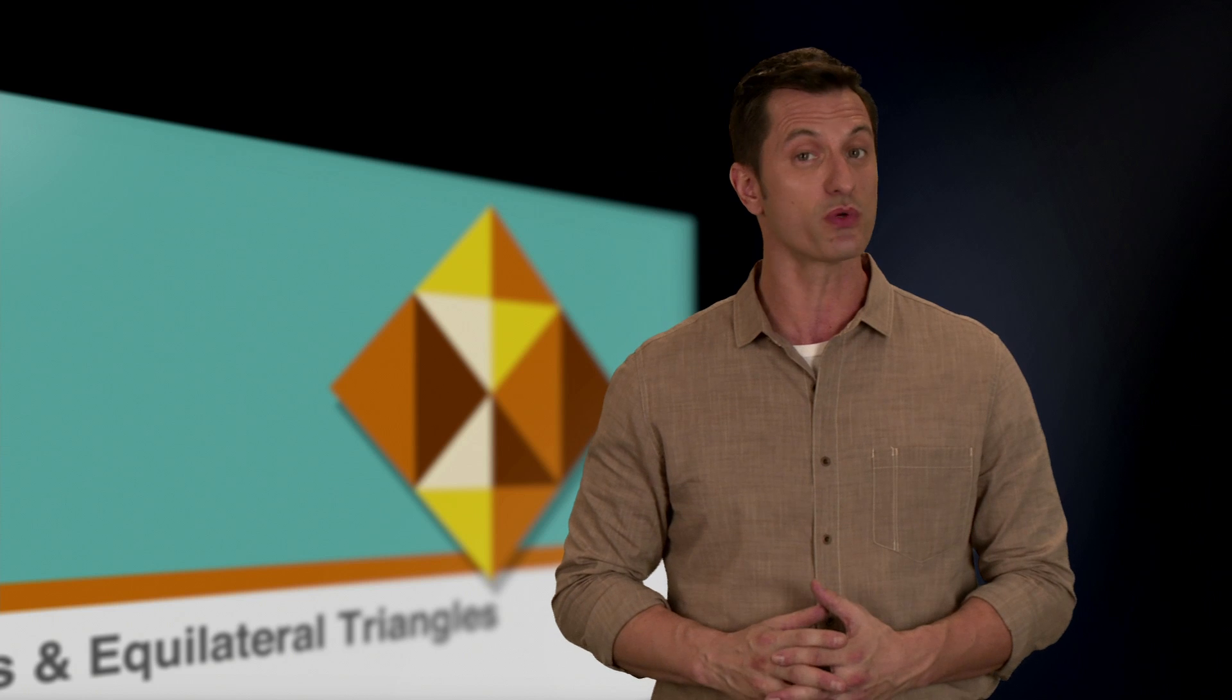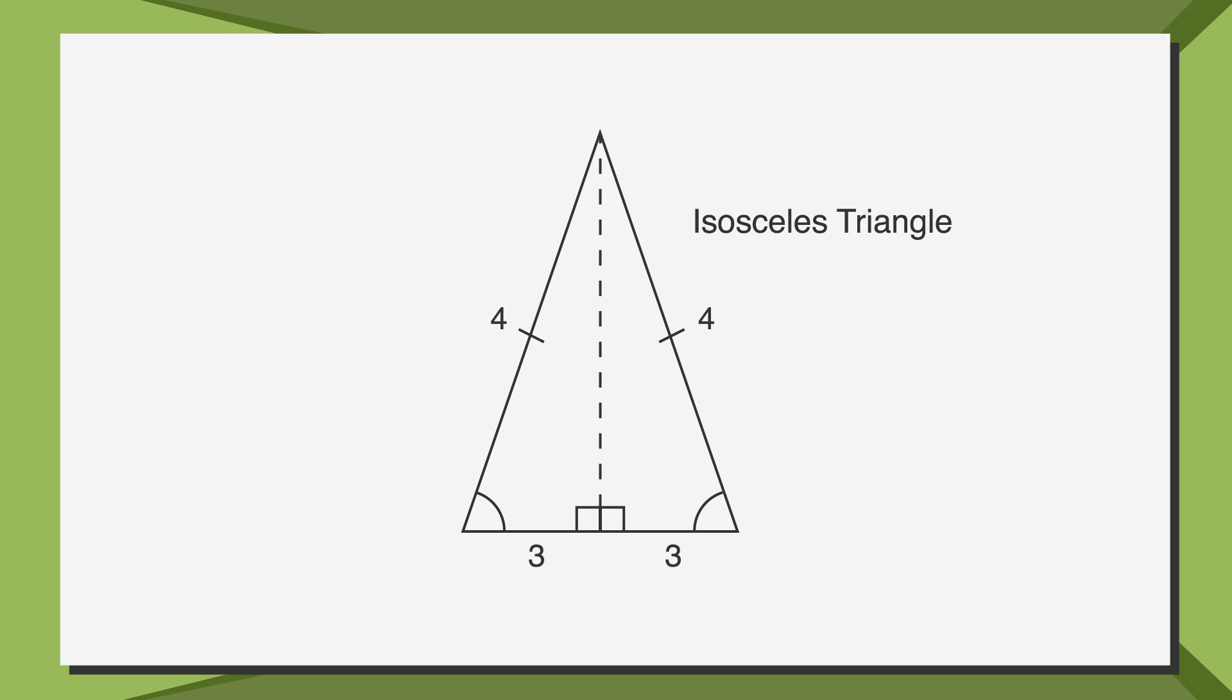When it comes down to the relationship between side length and angle measure, you'll remember that when two sides of a triangle are the same, the angles opposite those sides will be equal as well. So what does that mean for isosceles and equilateral triangles? In an isosceles triangle, two sides are congruent, as are the two angles directly opposite those sides. In this triangle, hash marks are used to show congruent sides and arcs are used to show congruent angles.